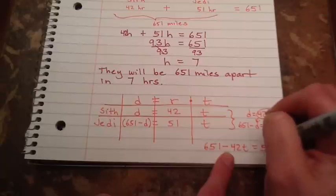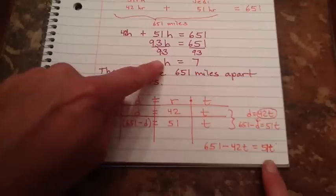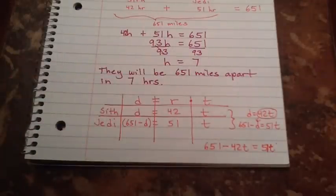Equals 51T. Oops. 51T. And you should all know how to solve from there by now. Once you solve you're going to find T. Which is your time in hours. And you should end up with 7.